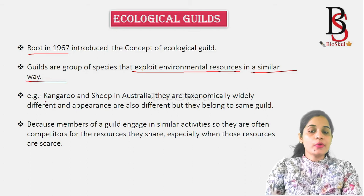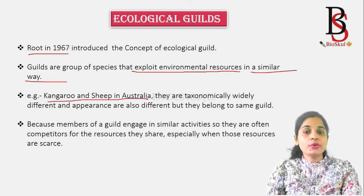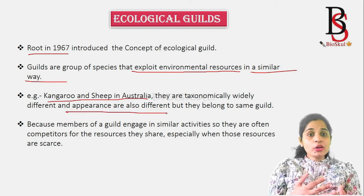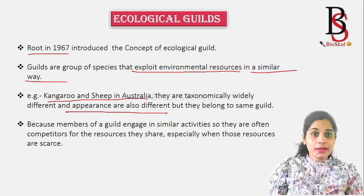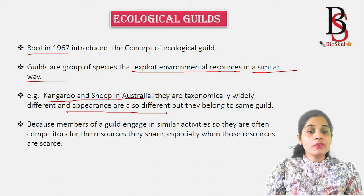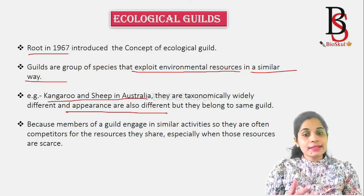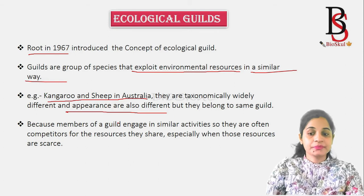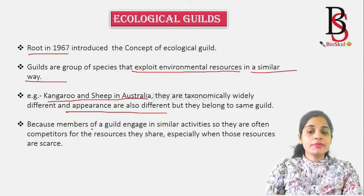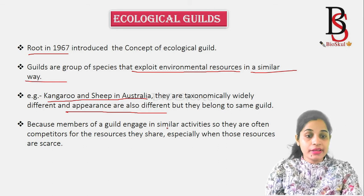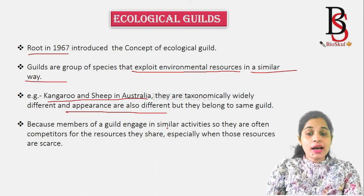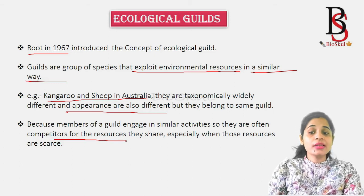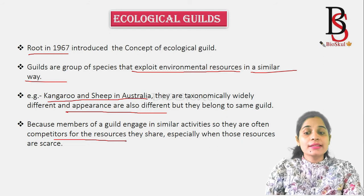For example, kangaroo and sheep in Australia are taxonomically very different and differ in appearance, but they belong to the same guild because their way of searching for environmental resources is similar. This may be because of their common ancestry. If members of a guild engage in similar types of activities, they are often competitors for resources, especially when resource availability is scarce.